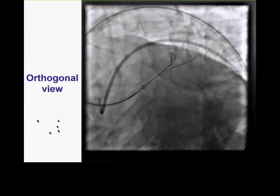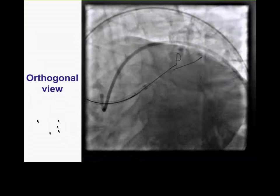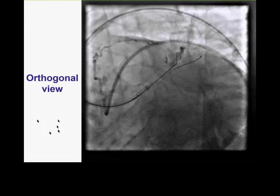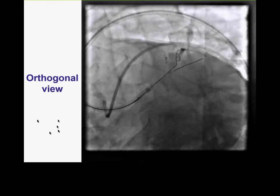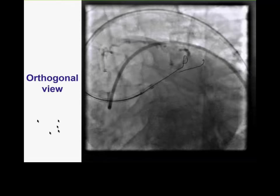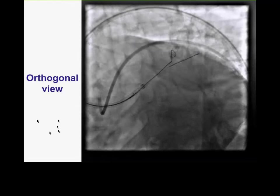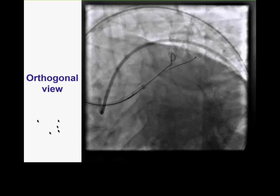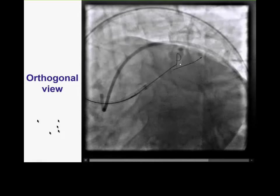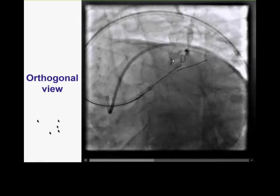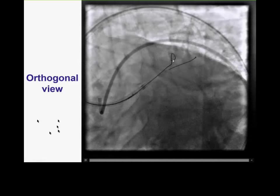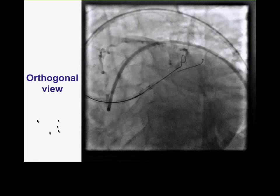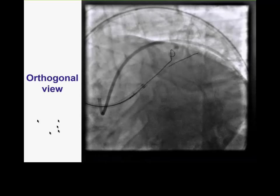We were now able to resolve the ambiguity by advancing a loop that went subintimal but is tracking the vessel. This is an example of the move-the-cap technique — when we don't understand where the lesion is starting, we create a small dissection proximal to the presumed origin of the occlusion, go subintimal, and then trust the knuckle or loop to follow the vessel structure rather than exit the vessel and cause perforation.